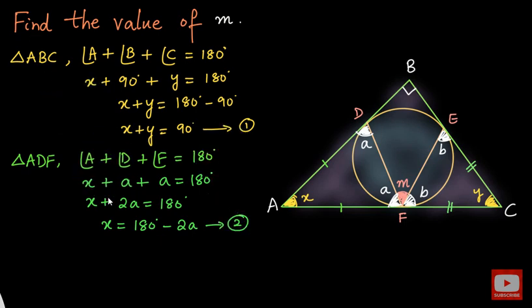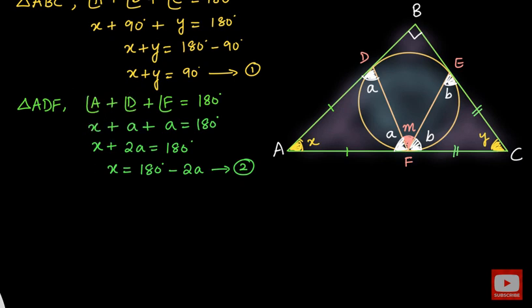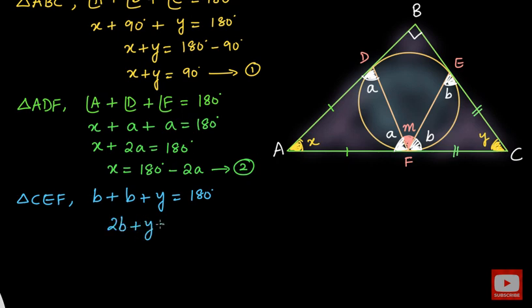Now I would like to go to triangle CEF. Applying the angle sum property directly: angle B plus angle B plus angle Y will be equal to 180 degrees in triangle CEF. So 2B plus Y equals 180 degrees, therefore Y equals 180 minus 2B. This will be result number 3.